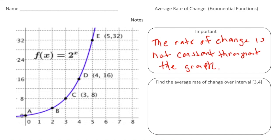What you have to do is find the average rate of change over certain intervals. We're going to find the average rate of change from point three to four. Point three is going to be right here at letter C, and the location of this point is (3, 8). And then for four, it's going to be location D, which is (4, 16).